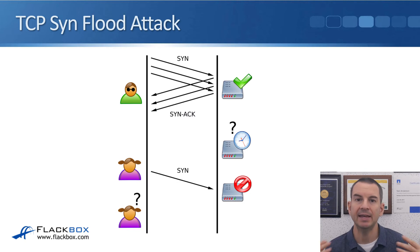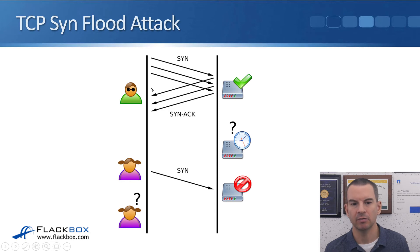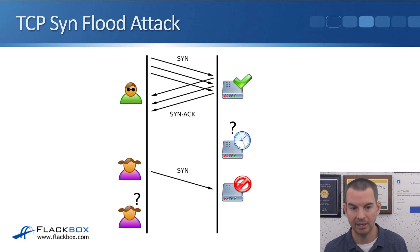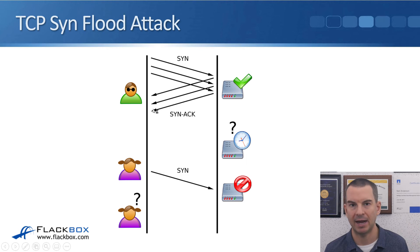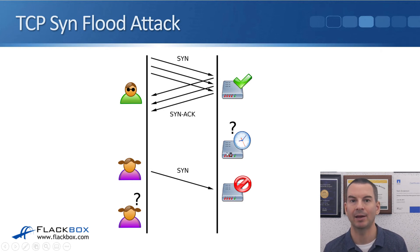In a TCP SYN flood attack, the attacker sends a SYN to initiate the connection. The server replies with a SYN-ACK, but the attacker never sends the final ACK, leaving a half-open connection. The attacker opens so many half-open connections that it exhausts the resources on the target system, preventing it from accepting any new legitimate connections and effectively bringing that system down.